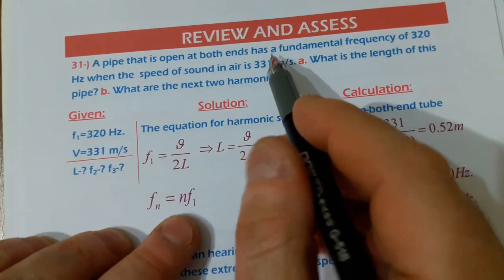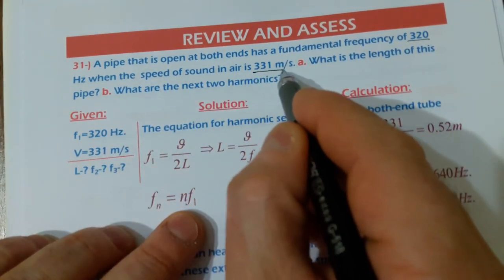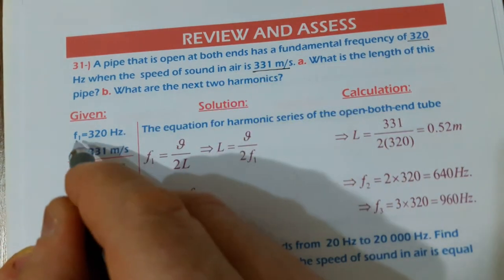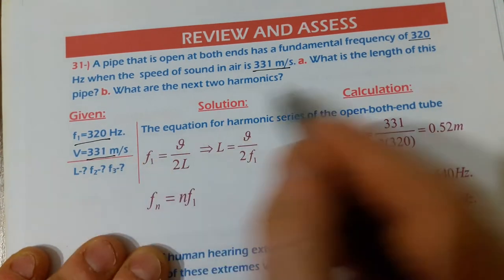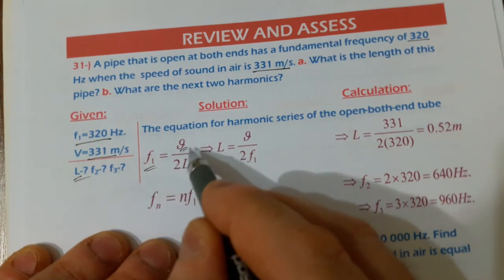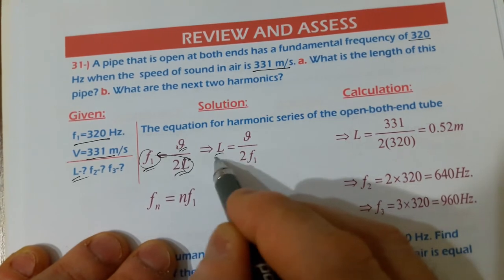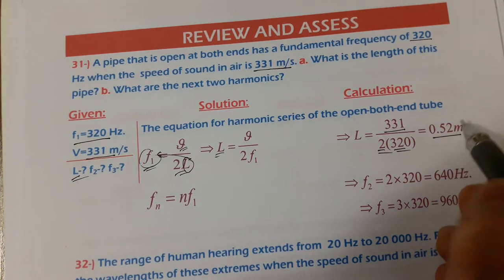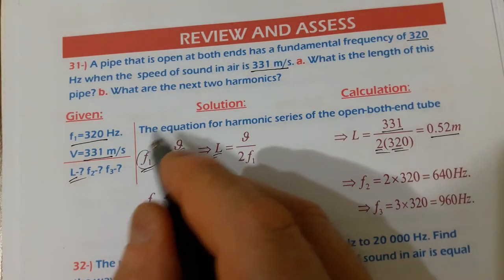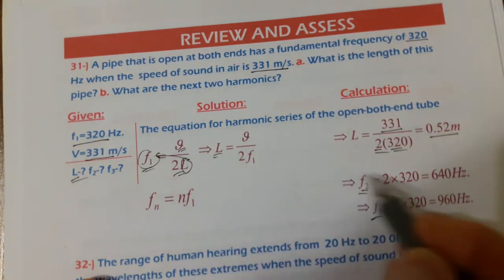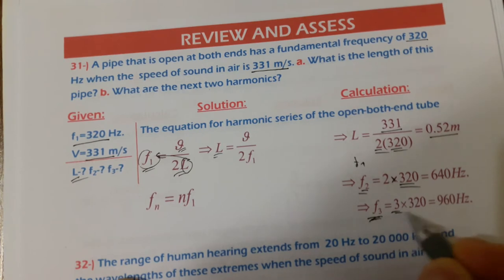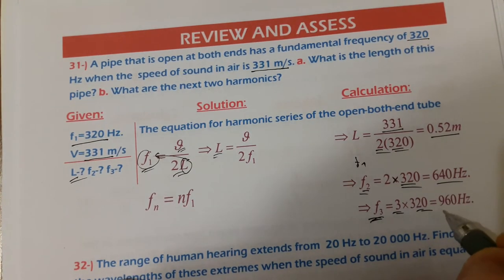A pipe open at both ends has a fundamental frequency of 320 Hz when the speed of sound is 331 m/s. For an open-ended pipe, F1 = V/2L, so L = V/2F1 = 331/(2 × 320) ≈ 0.517 m. The next two harmonics are F2 = 2 × F1 = 640 Hz and F3 = 3 × F1 = 960 Hz.